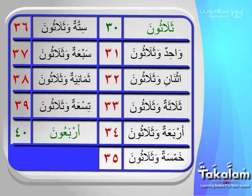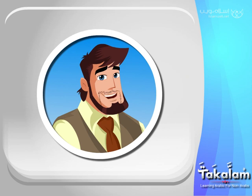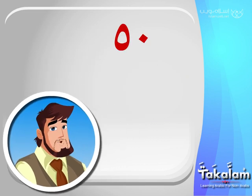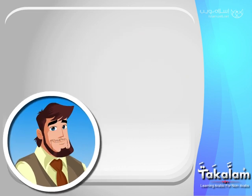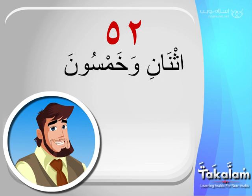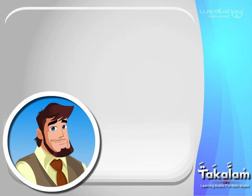After أربعون, the same pattern continues all the way to 90. So we just need to know that 50 is خمسون. Accordingly, 52 for example would be إثنان وخمسون.